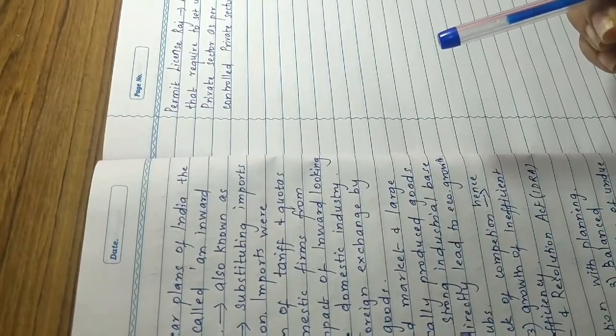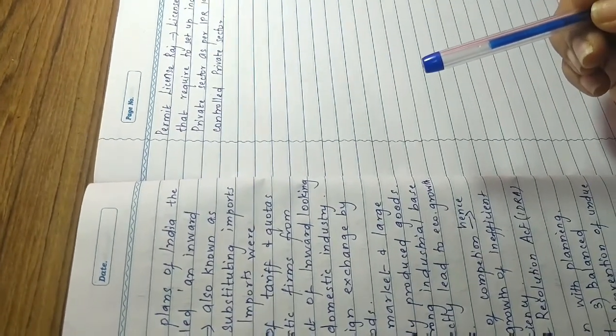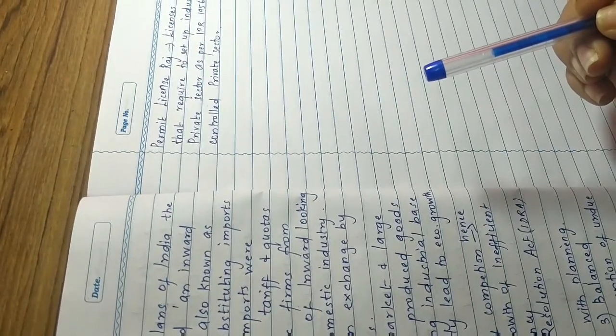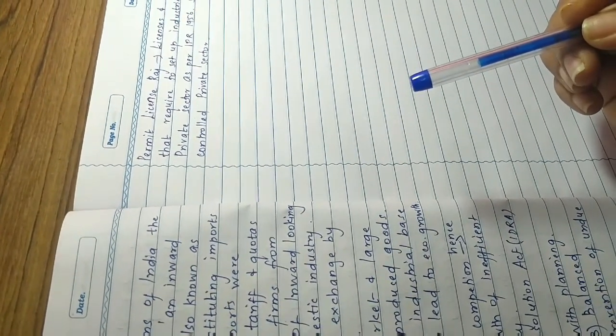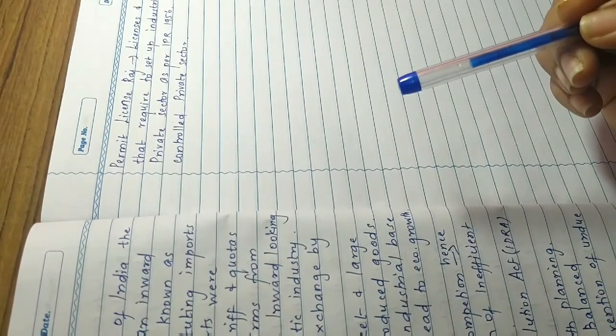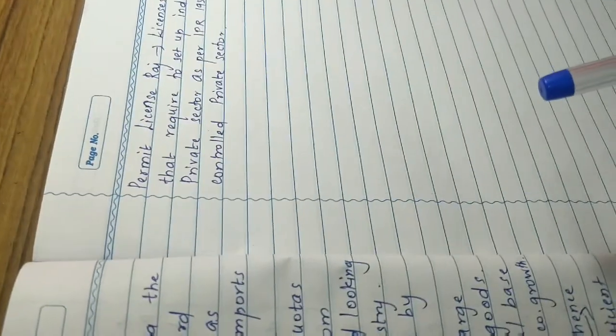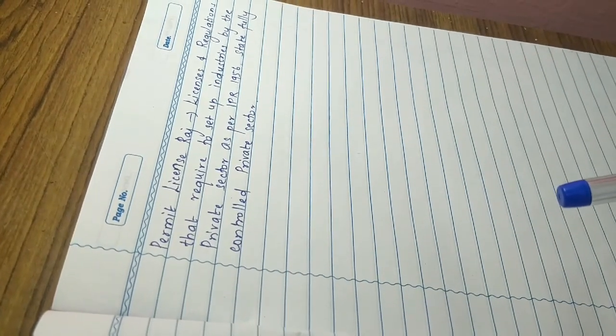The government was close to default. With India's foreign exchange reserves at US $1.2 billion in January 1991 and depleted by half by June, an amount barely enough to cover roughly three weeks of essential imports, India was only two weeks away from defaulting on its external balance of payment obligations. India was in the need of an international monetary fund bailout. The price of the bailout was the License Raj.